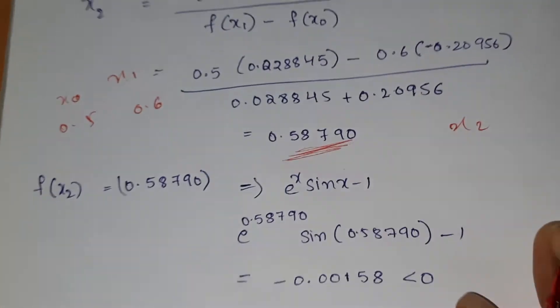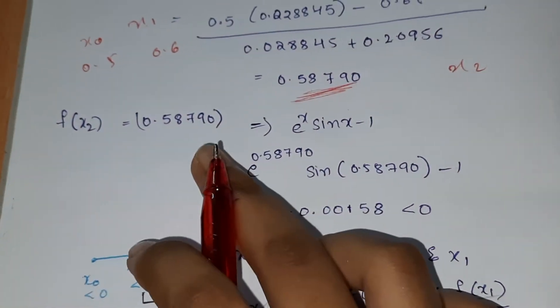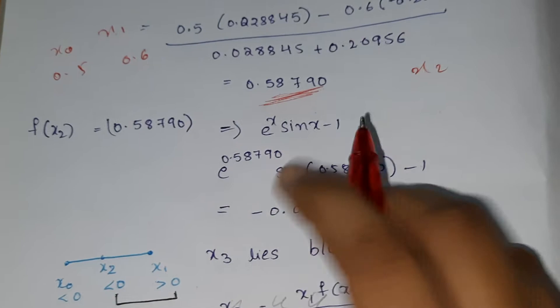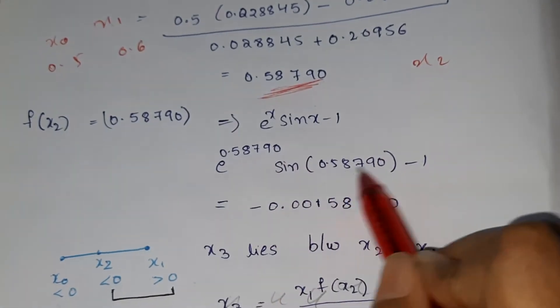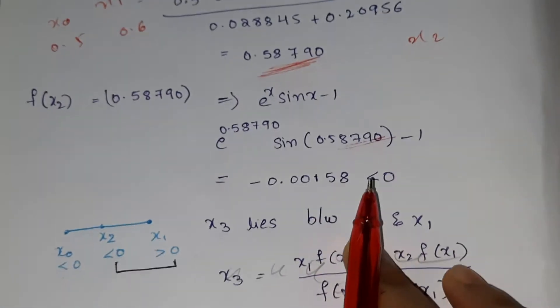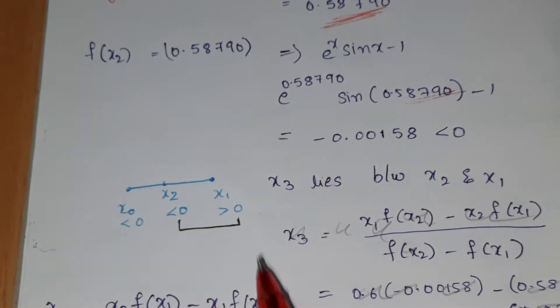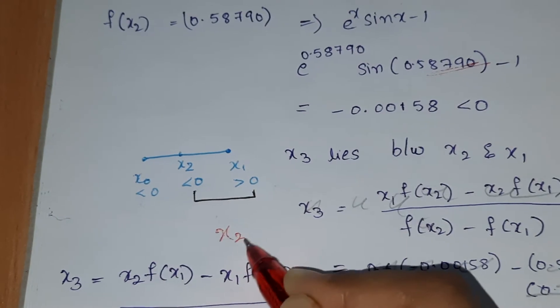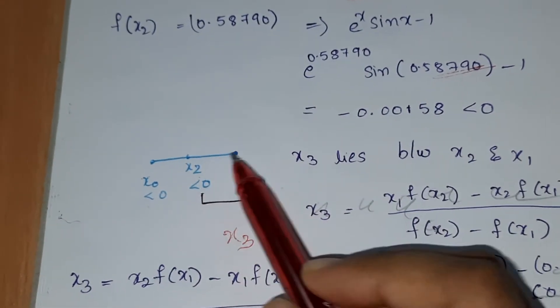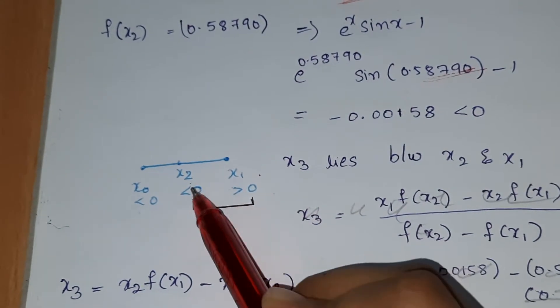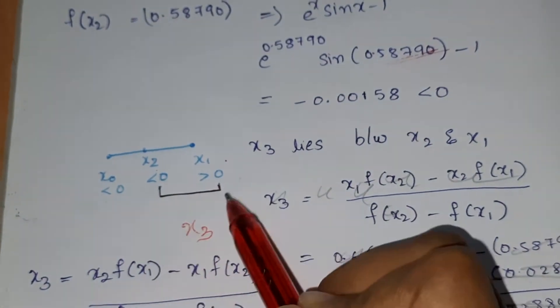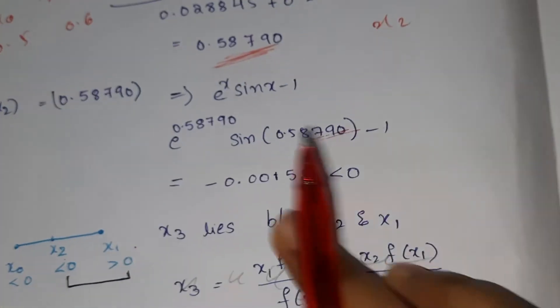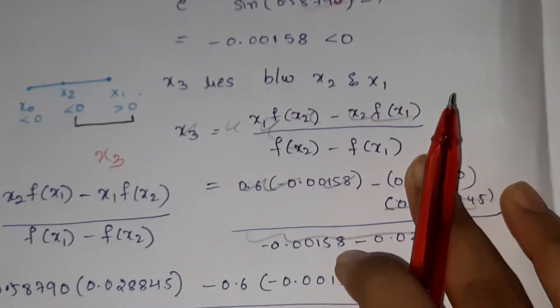Now f(x2): substitute the value, remember to take it in radians. You'll get negative. Since x2 is negative and x1 is positive, x3 lies between x2 and x1.